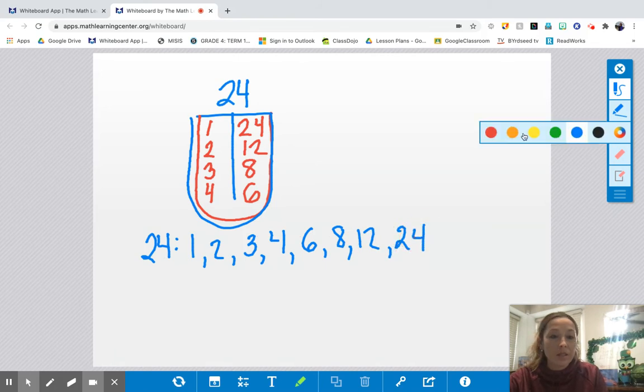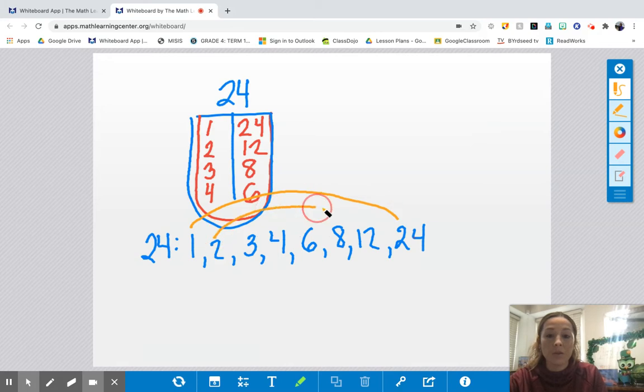Another strategy some people use is called the rainbow. And it's when you connect your factors once they're listed out just to make sure you have them all. So I have 1 goes with 24, 2 goes with 12, 3 goes with 8, and 4 goes with 6. And so it kind of makes a rainbow design. And it's just making sure that you have all the factors you need to have.